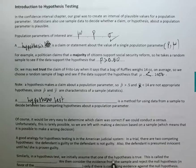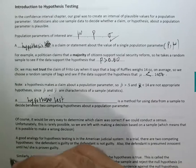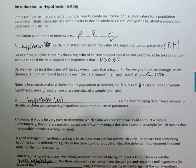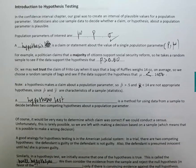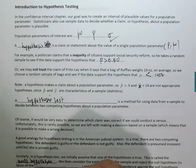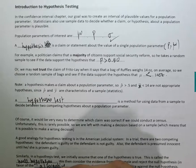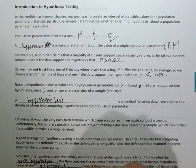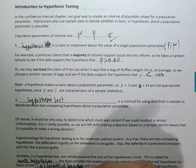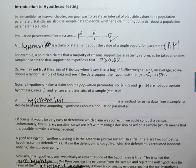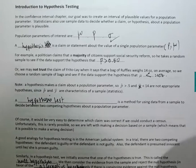In a hypothesis test, we initially assume that one of the hypotheses is true — this is called the null hypothesis. We then consider evidence from a sample and reject the null hypothesis in favor of the alternative hypothesis if we have sufficient evidence. The null hypothesis is denoted by H₀ and the alternative hypothesis in your book is denoted by H₁.